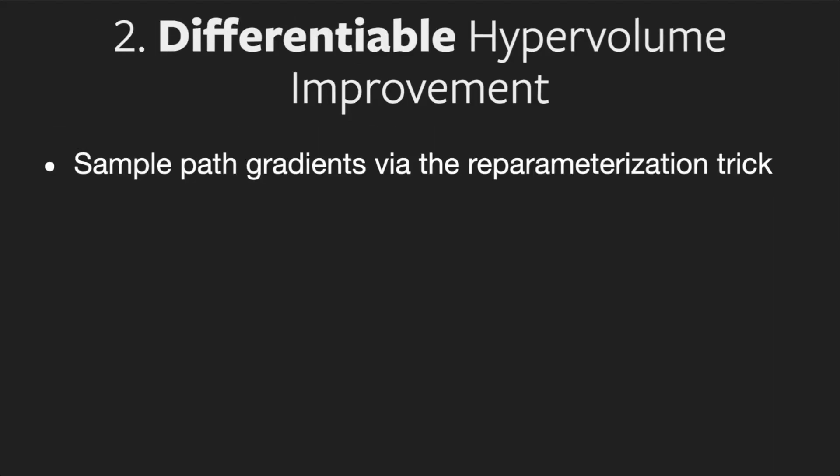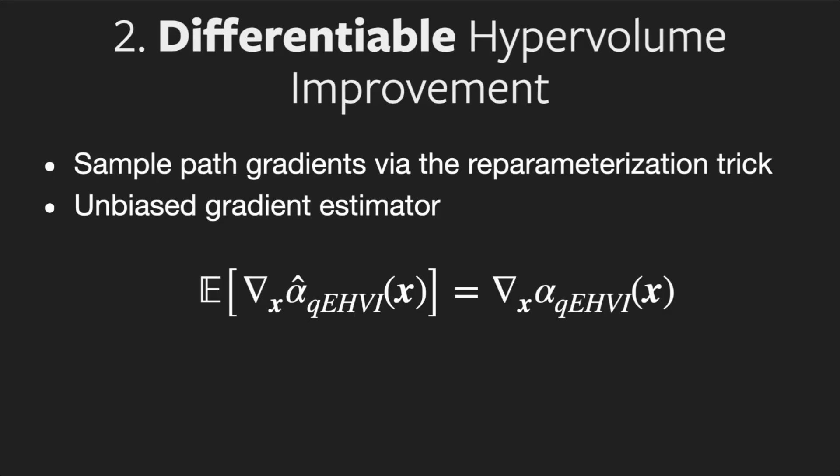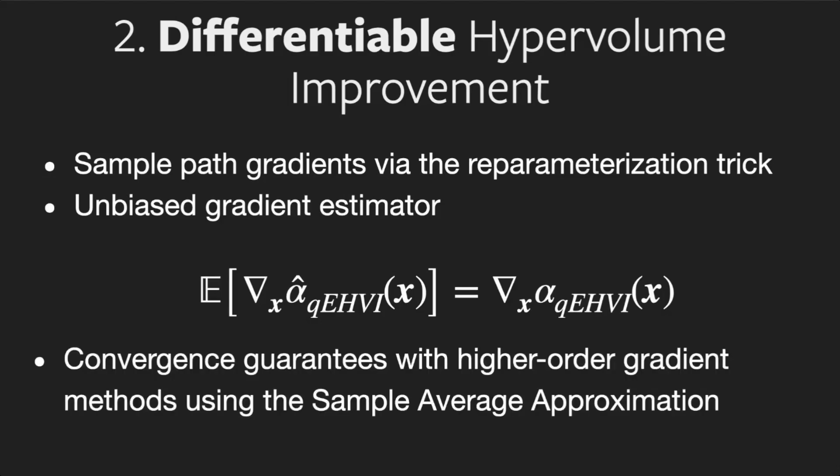This acquisition function is fully differentiable. We compute sample path gradients via the reparameterization trick and auto-differentiation. We show that the average sample gradient is an unbiased estimator of the true gradient, and we provide convergence guarantees with higher-order gradient methods using the sample average approximation.